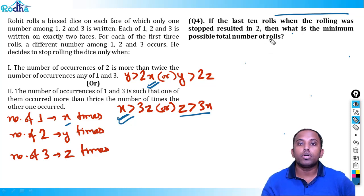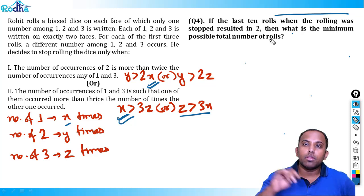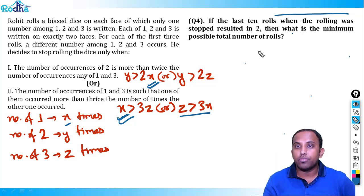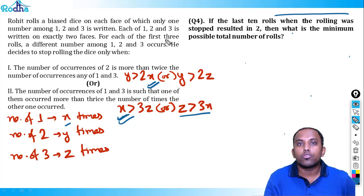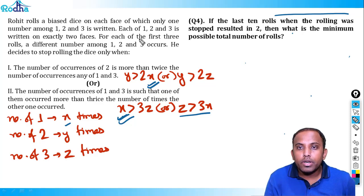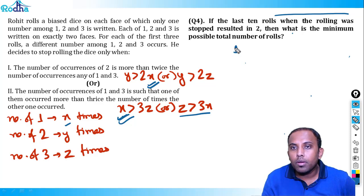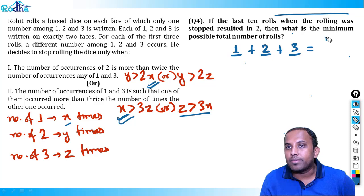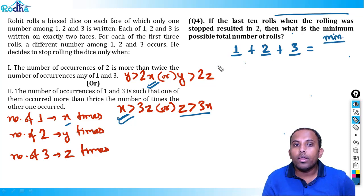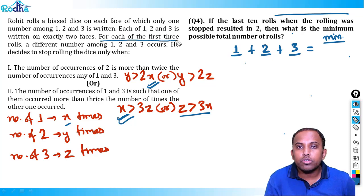Let me verify: x = 5, y = 11, z = 5. Condition 1: y = 11 > 2×5 = 10, so yes the dice stops. The total rolls = 5 + 11 + 5 = 21. The answer to question 4 is 21.